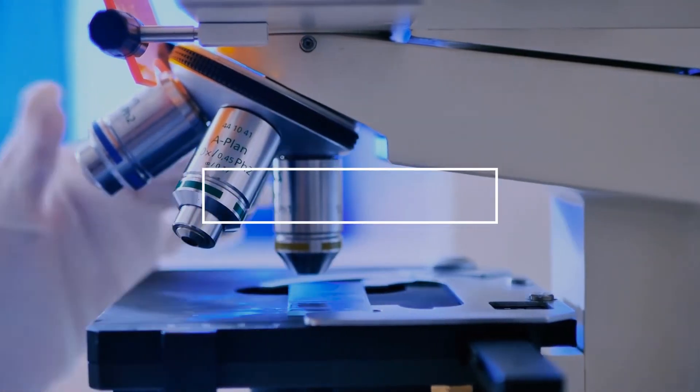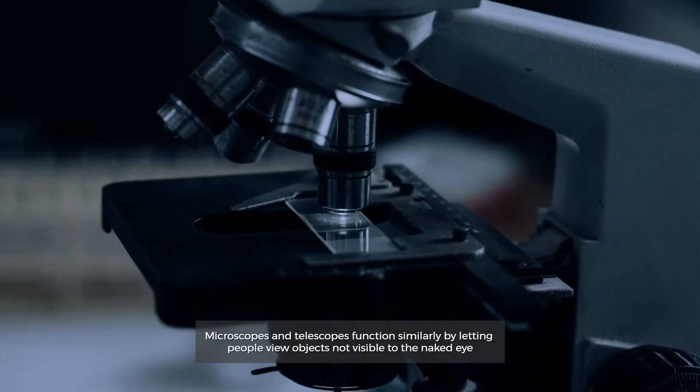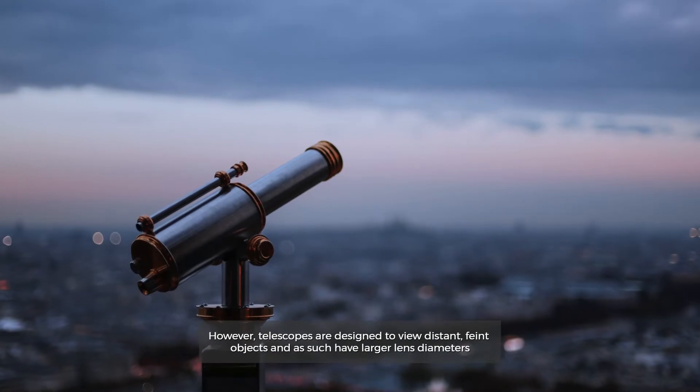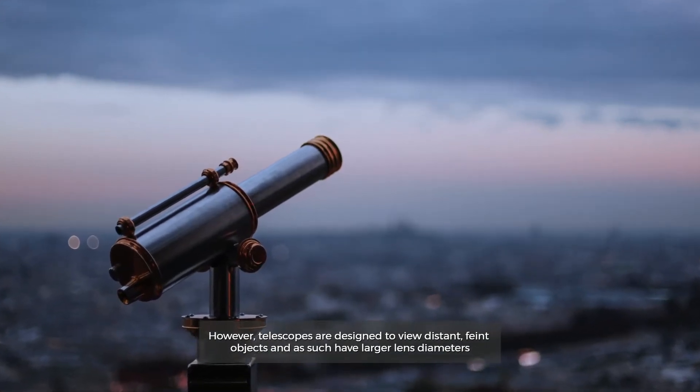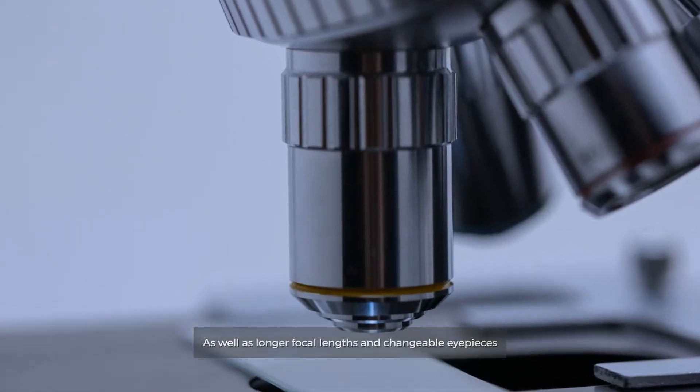Telescope vs microscope. Microscopes and telescopes function similarly by letting people view objects not visible to the naked eye. However, telescopes are designed to view distant faint objects and as such have larger lens diameters as well as longer focal lengths and changeable eyepieces.